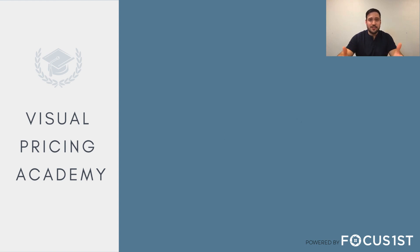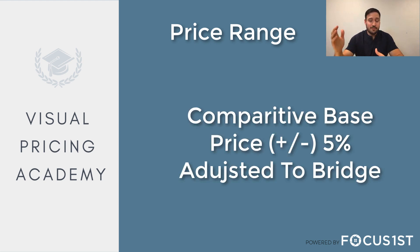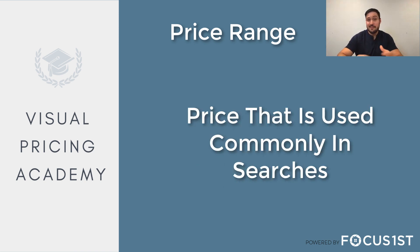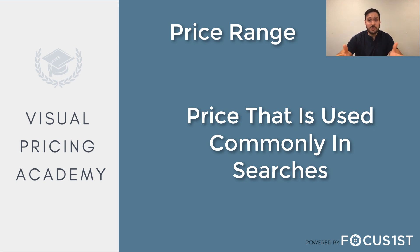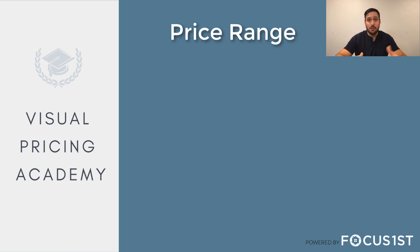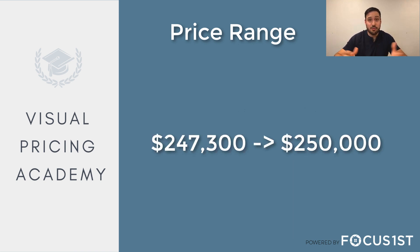To find that range, the general rule is you take your comparative base price from the scattergram, go up 5% and go down 5%, then adjust to be on a bridge. A bridge is a price that makes sense when you think about how a buyer is searching in the MLS. Very few people are going to be searching for a number that ends in $300. For example, if you're thinking about a $247,300 price on the top end of the 5% increase, we want to round that up to $250,000 because most people will be searching by that number.